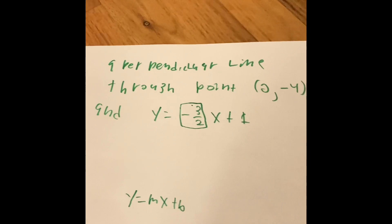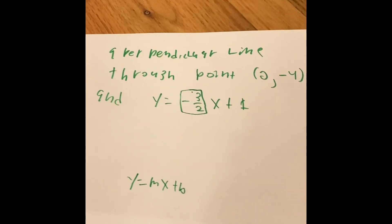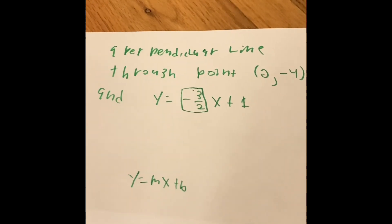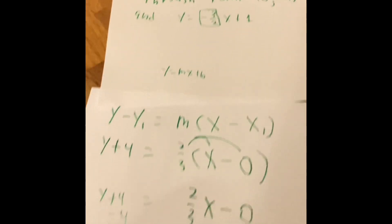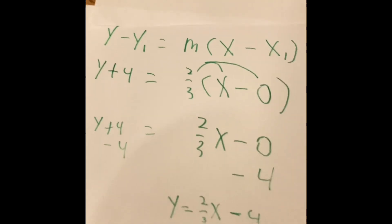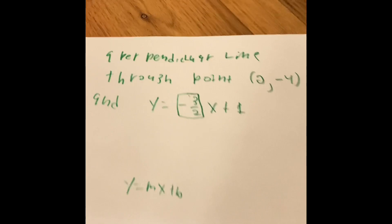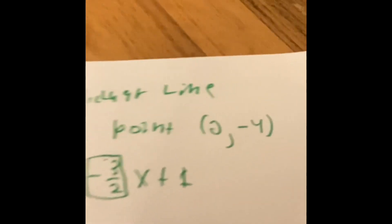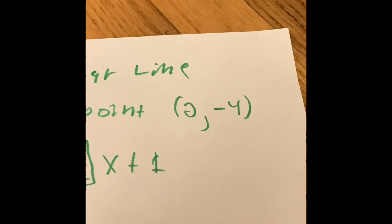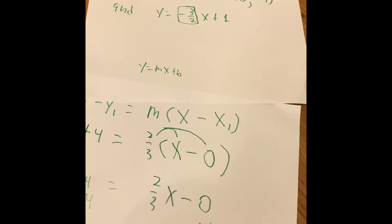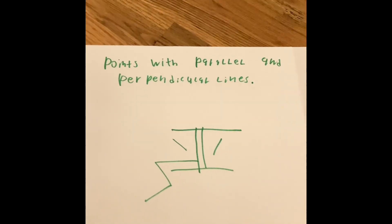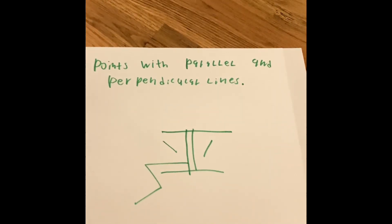If you ever try these kinds of problems at school, always remember to find the opposite reciprocal first, then do point slope form. If you do point slope first and the opposite reciprocal second, you will get a perpendicular line, but it will not pass through (0, -4). We have finally solved this problem. I hope this video has helped you. Thank you for watching Life's Math Industry — like and subscribe!